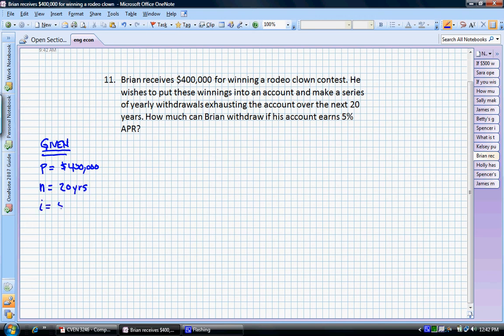His interest rate is 5% APR. And what he needs to find here is what's this regular series of withdrawals that he can make exhausting that account over the course of the next 20 years.